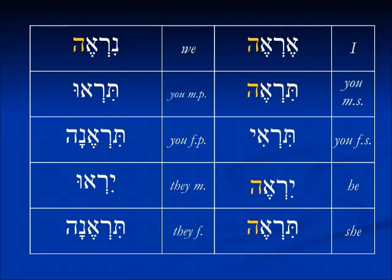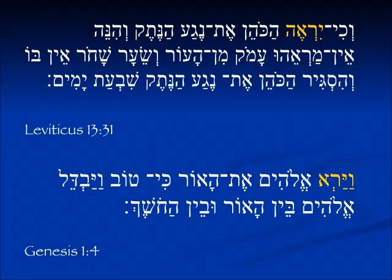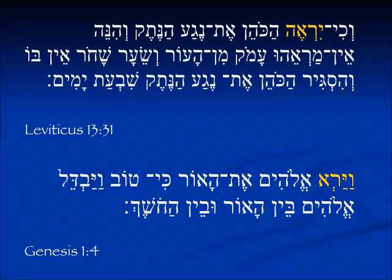Five of these ten forms still end in hey after the conjugation. From Leviticus 13:31 we see a normal form: v'chi yireh ha-kohen — 'and when the kohen will see' — it looks perfectly normal, with the yud prefix and the rest of the letters for the verb present. When we come to the vav conversive imperfect, all the way from Genesis 1:4, it says v'yar Elohim — 'and Elohim saw' — and we see that the hey falls off. We don't read it as 'he will see'; we read it as 'he saw.'